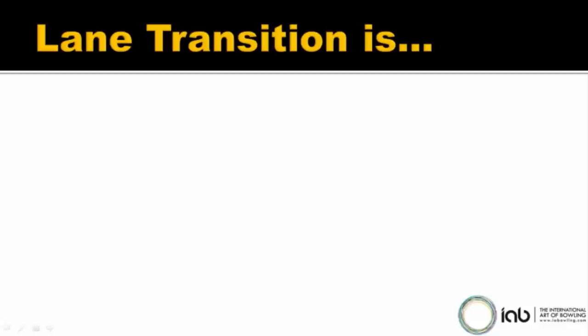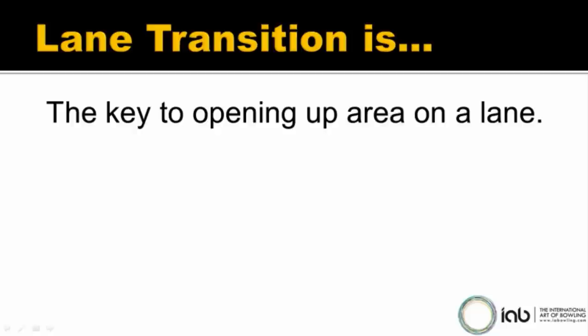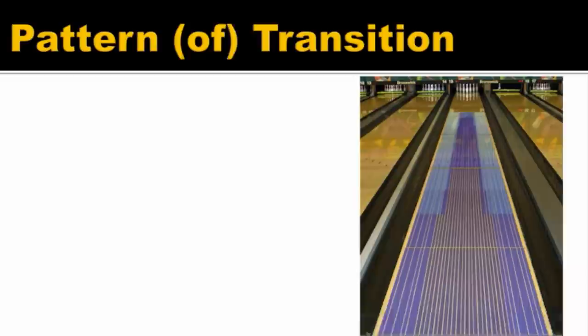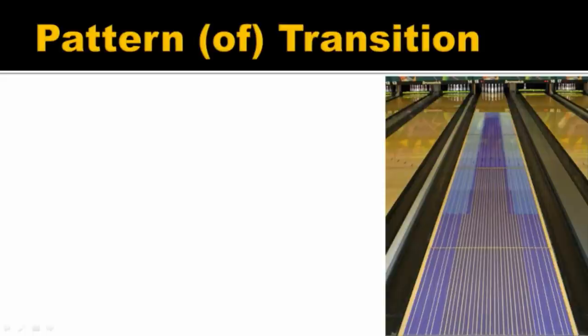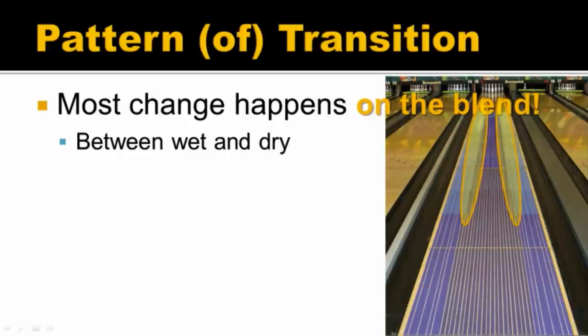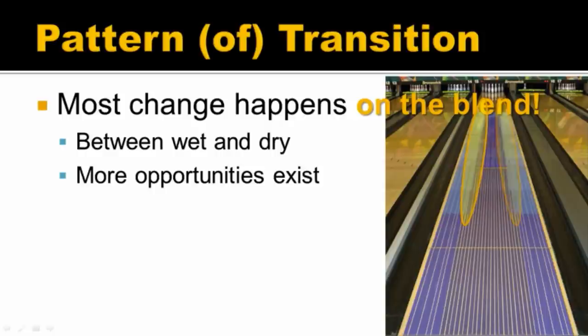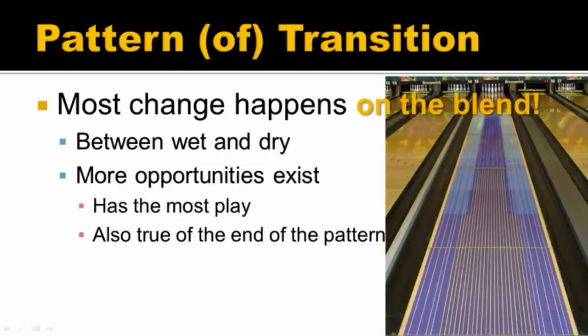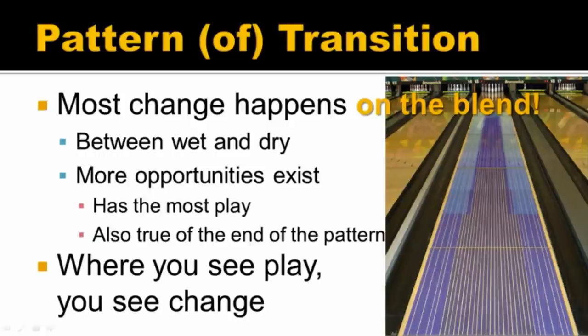So with all these problems becoming solutions, you can see that lane transition is actually the key to opening up some area on the bowling lane. Lane transition is the change you're looking for. Most changes happen on the blend of a pattern — I've put the pattern on the lane and drawn two ellipses where the blend is. That's the point where the wet and the dry meet, and there is a change in the amount of friction available. More scoring opportunities exist on this part of the lane — consequently, it has the most play. And this is also true at the end of the pattern, where the pattern gets thinner. Where you see play, you see change, and where you see change, you see opportunity.